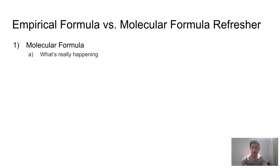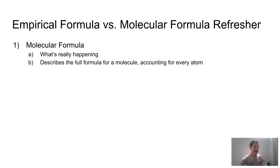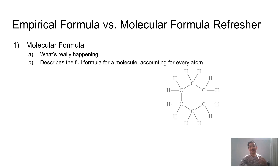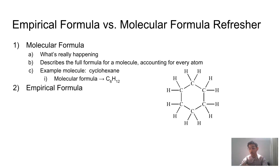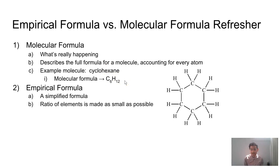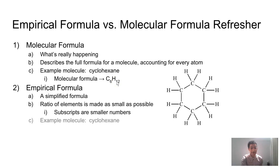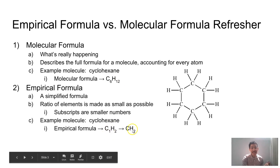Empirical formulas versus molecular formulas: a molecular formula tells you what's really happening. It describes the full formula of a molecule counting for every atom. So what we see here is hexane C6H12, and we can see all of those atoms and how they are connected. Cyclohexane, my example over here, is C6H12. On the other hand, an empirical formula is going to be a simplified or reduced version of our molecular formula. We will take the ratio between elements in our molecular formula and make that as small as possible. So instead of a 6 to 12 ratio, we reduce that to a 1 to 2, or CH2.